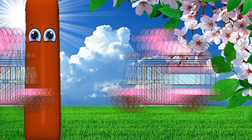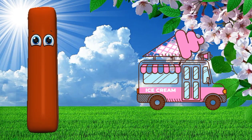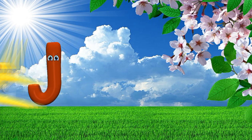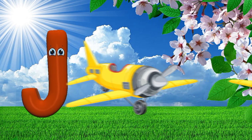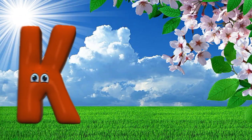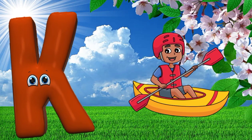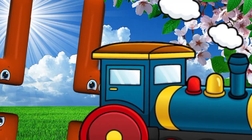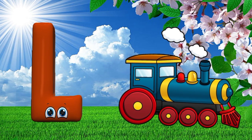I is for ice cream truck, ice cream truck. J is for jet, J, j, jet. K is for kayak, K, k, kayak. L is for locomotive, L, l, locomotive.